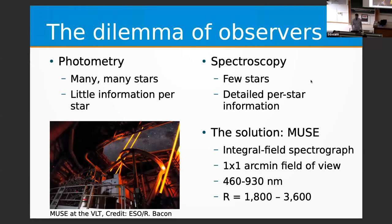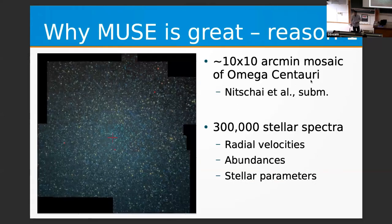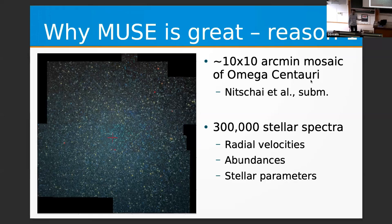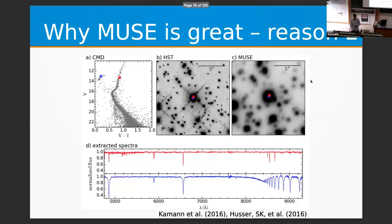In particular, one instrument that has kept me busy for the last decade is the integral field spectrograph MUSE, mounted at UT4 of the Very Large Telescope. It has a 1×1 arcminute field of view, a spaxel size of 0.2 arcseconds, a wide wavelength range covering most of the optical, and a medium spectral resolution of 2,000–3,000. Rather than boring numbers, let's look at what MUSE can deliver. This is a 10×10 arcminute image of Omega Centauri — but for each star you see, there is an entire spectrum. This 10×10 MUSE mosaic gives access to about 300,000 stellar spectra: 300,000 radial velocities, 300,000 abundances or stellar parameters.